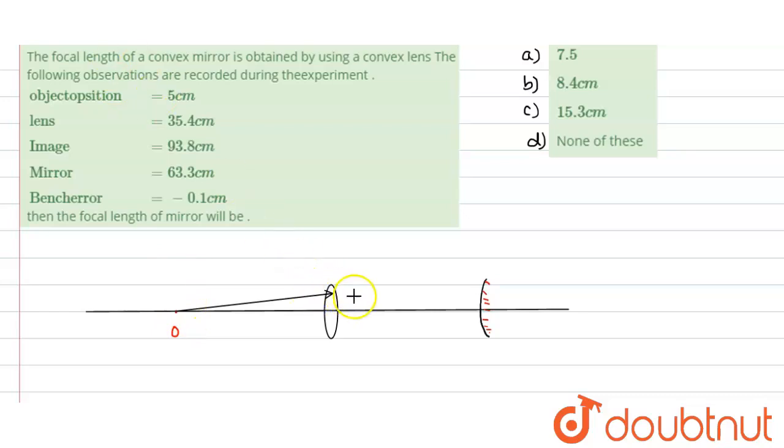What is the possibility when the final image would be coinciding with the object itself? Only when the ray which goes from the lens, it should meet normally on the mirror, so that it should retrace the path and the final image is formed here.